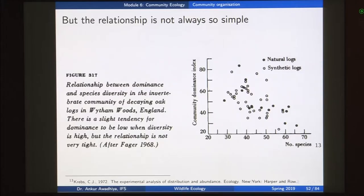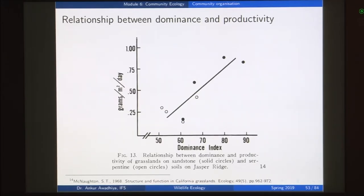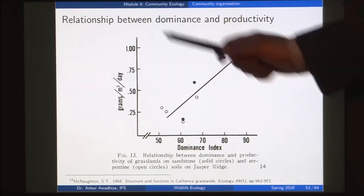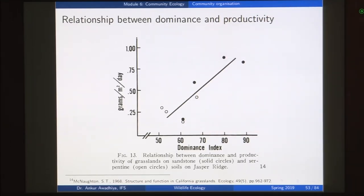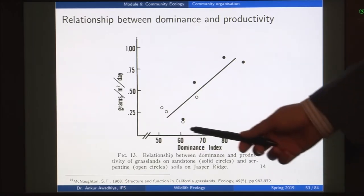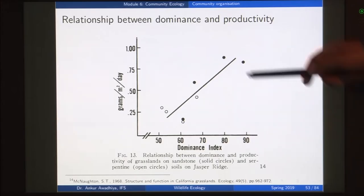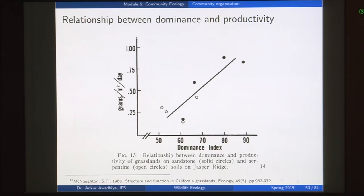There is one correlation that is much more prominent: the relationship between dominance and productivity. Here we look at the relationship between dominance and productivity of grasslands on sandstone and serpentine soils at Jasper Ridge. The dominance index is on one axis and productivity in grams per square meter per day on the other. We can see that lower dominance index corresponds to roughly low productivity and higher dominance index corresponds to roughly high productivity.